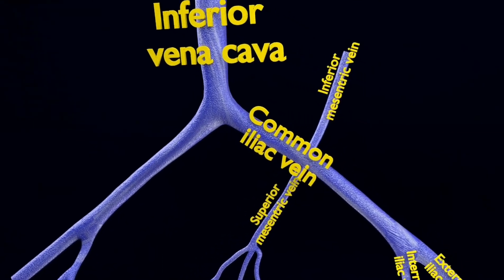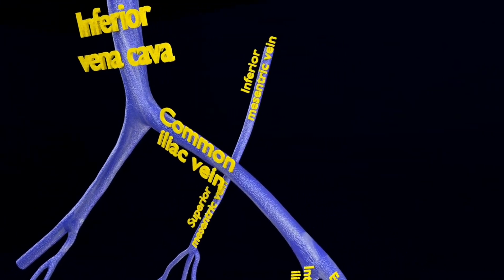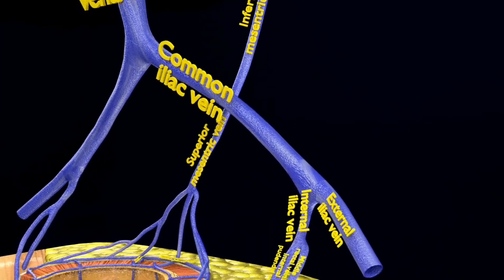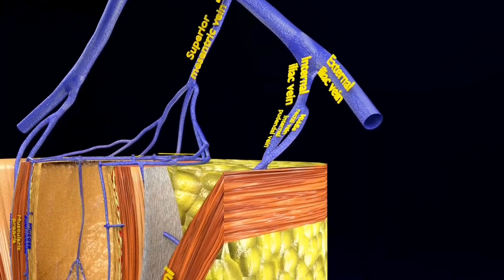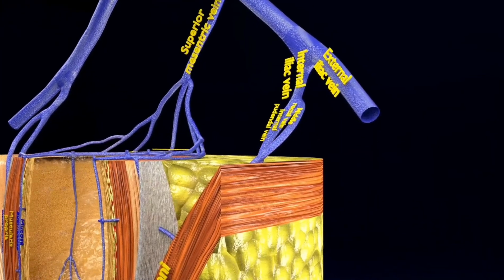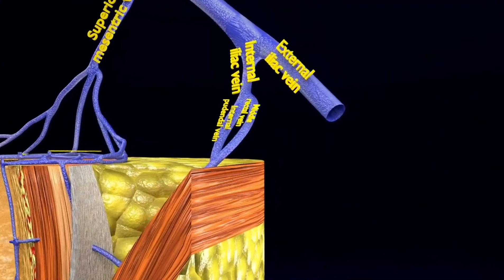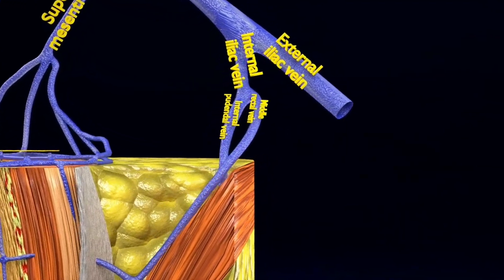Nearly 3 out of 4 adults have hemorrhoids from time to time. The venous supply of the rectum is through three rectal veins: the superior, middle, and inferior rectal vein.